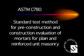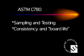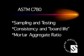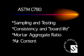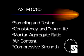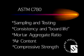ASTM C-780 is the standard test method for pre-construction and construction evaluation of mortars for plain and reinforced unit masonry. That covers sampling and testing, consistency and board life, mortar aggregate ratio, air content, and compressive strength of mortar cubes and cylinders.